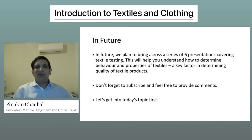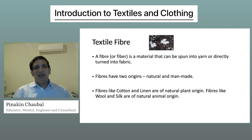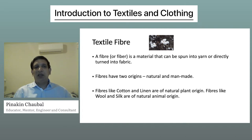Textile fiber. A fiber is a material that can be spun into yarn or directly turned into fabric. Fibers have two origins: natural and man-made. Fibers like cotton and linen are of natural plant origin. Fibers like wool and silk are of natural animal origin.